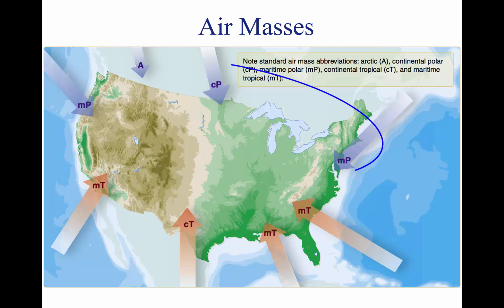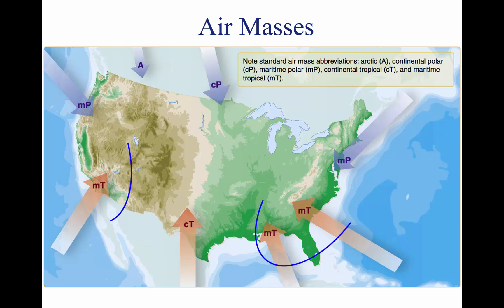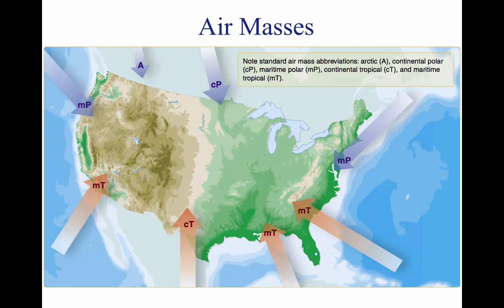Air masses are generally identified as polar or tropical, depending on temperature characteristics, and maritime or continental, based on moisture content. As shown above, a continental polar air mass forms over a polar region and brings cool, dry air with it. Maritime tropical air masses form over warm tropical waters, like the Caribbean Sea, and bring warm, moist air.